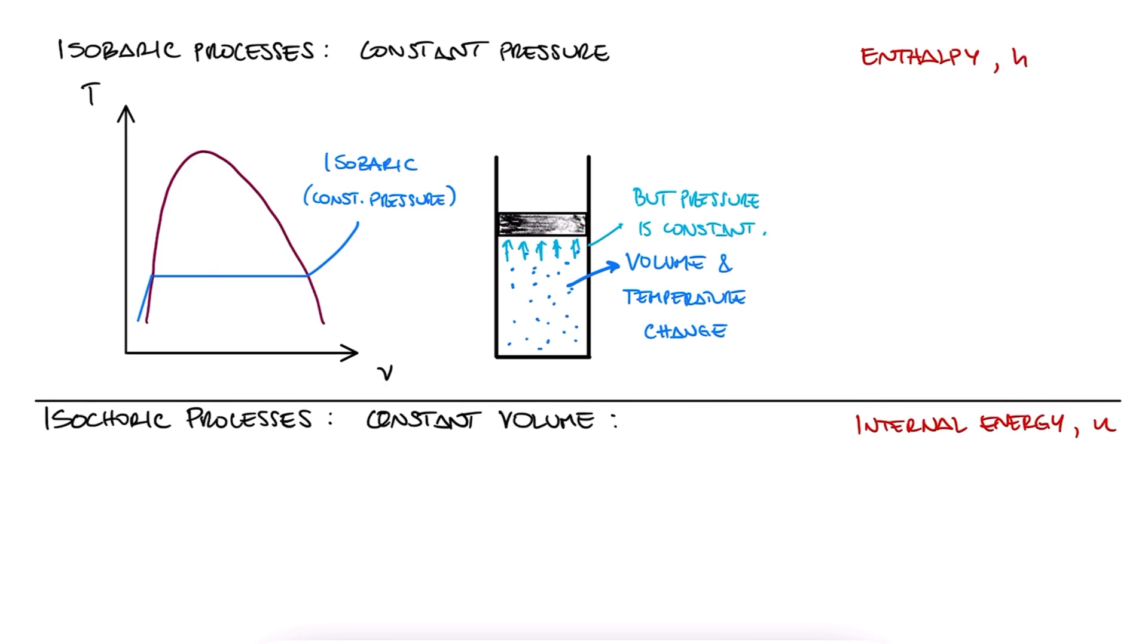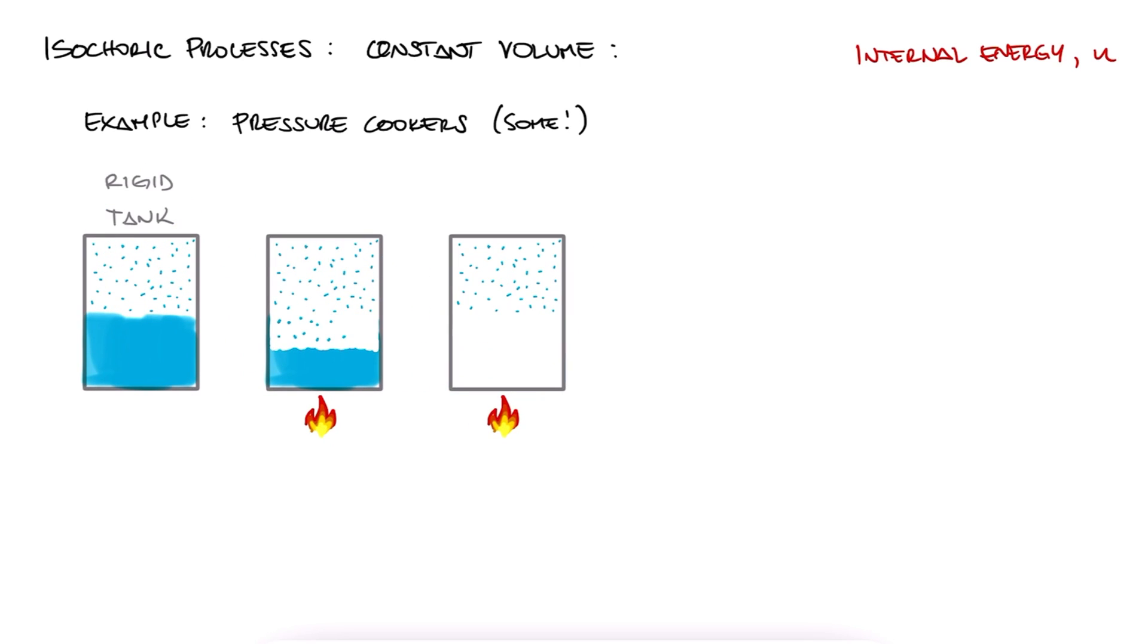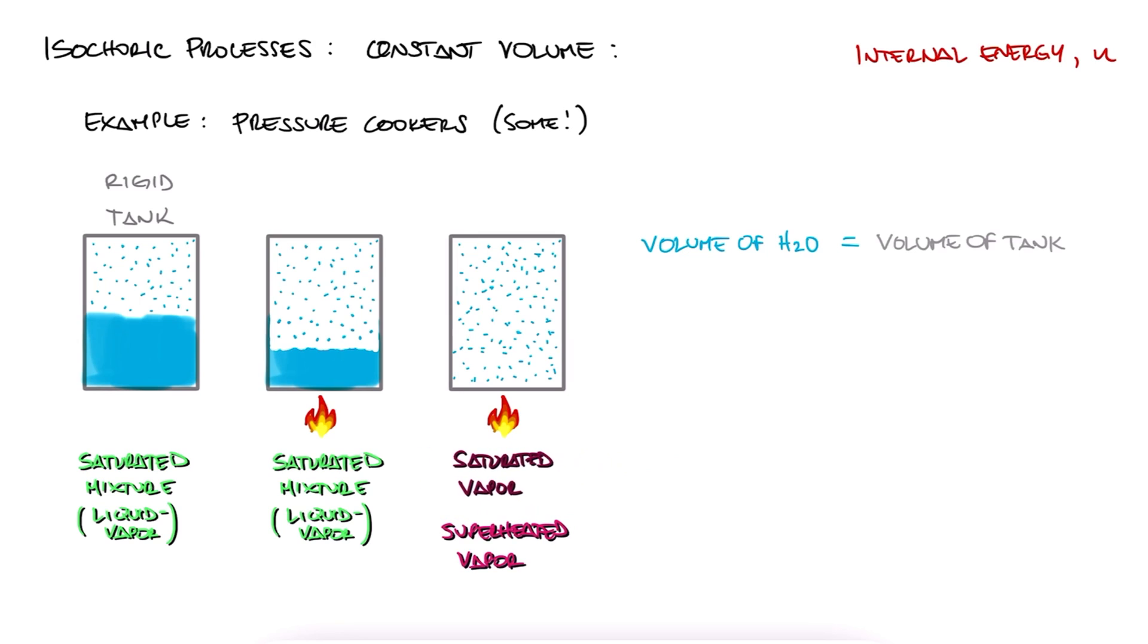An example of a constant volume process can be as simple as an Instapot or other types of pressure cookers. We can have a rigid tank that prevents its contents from increasing or decreasing volume. We can have some liquid water in there with a little bit already being vapor, and we can add heat to it, making some or all of the liquid water become vapor. This would be the case of heating at constant volume, since the total volume of H2O inside the tank is the volume of the tank itself.